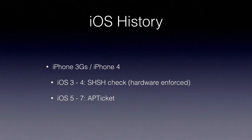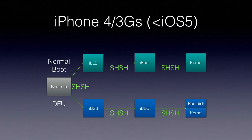Continuing with iOS history: with the iPhone 3GS and iPhone 4, things changed. With iOS 3 to iOS 4, Apple had hardware-enforced SHSH checks — those were new in those two devices. Starting with iOS 5, Apple introduced AP tickets. On pre-iOS 5 iPhone 4 and 3GS, the only difference in the boot chain is that the boot ROM does verify the SHSH blobs.